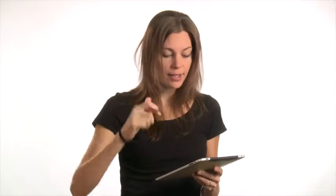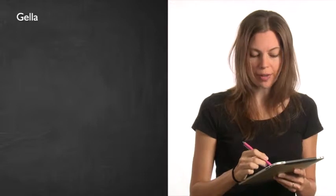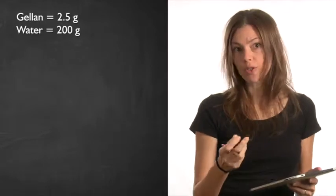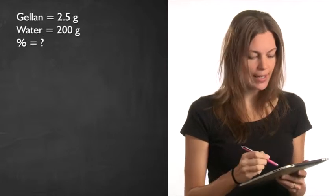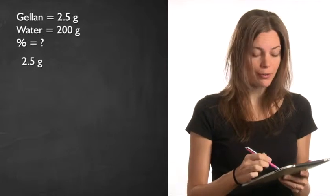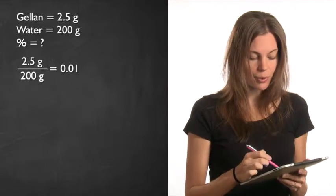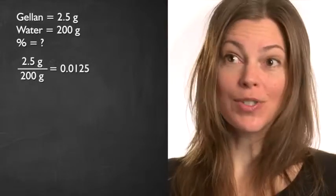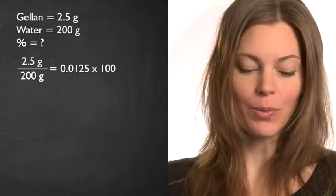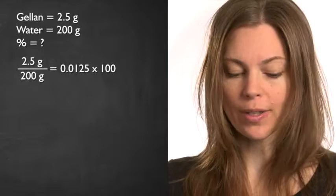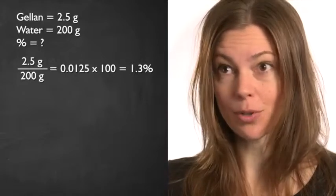Let's say we wanted to make elastic gels with a thickener, gellan. If you use 2.5 grams of gellan in 200 grams of water, and you wanted to know what the percentage is, you would take 2.5 grams over 200 grams equals 0.0125. Since percent is one hundredth, we would move the decimal point over by 2, and this would be 1.3%.